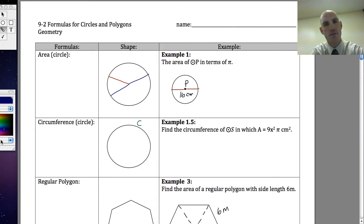Welcome back guys. Today we're going to be talking about the first half of section 9.2. Section 9.2 is dealing with developing the formulas for circles and for polygons. We're just going to talk about circles today.